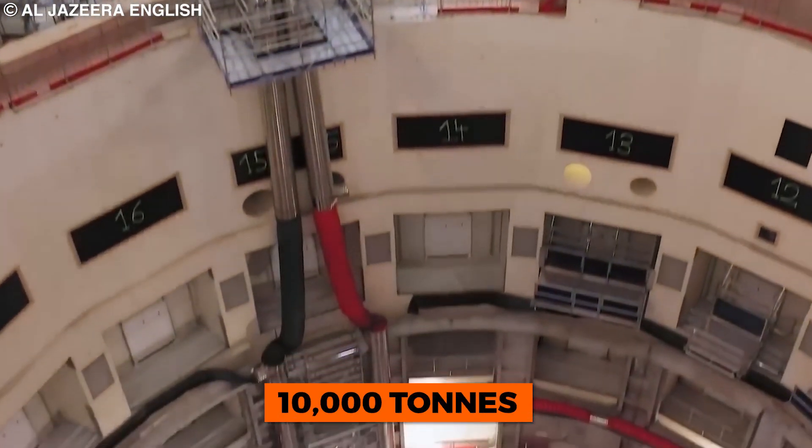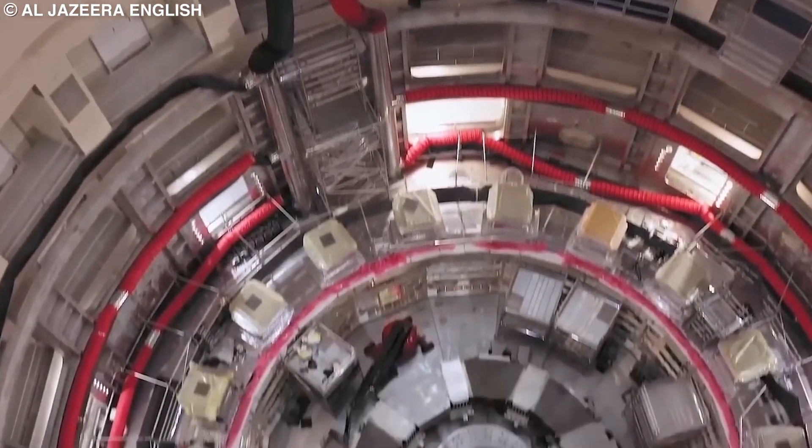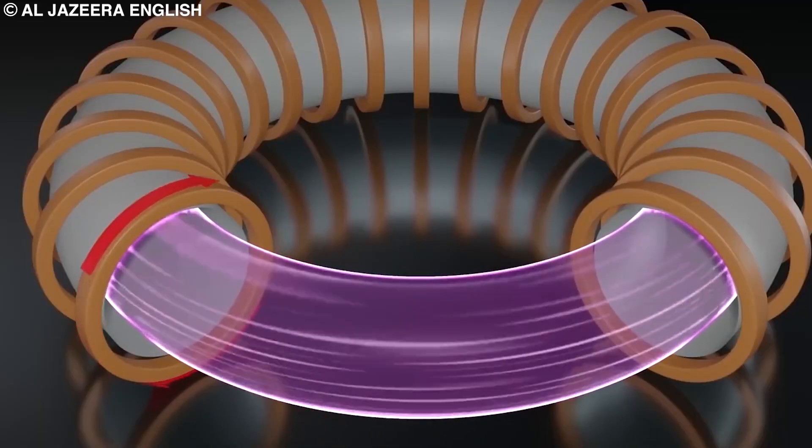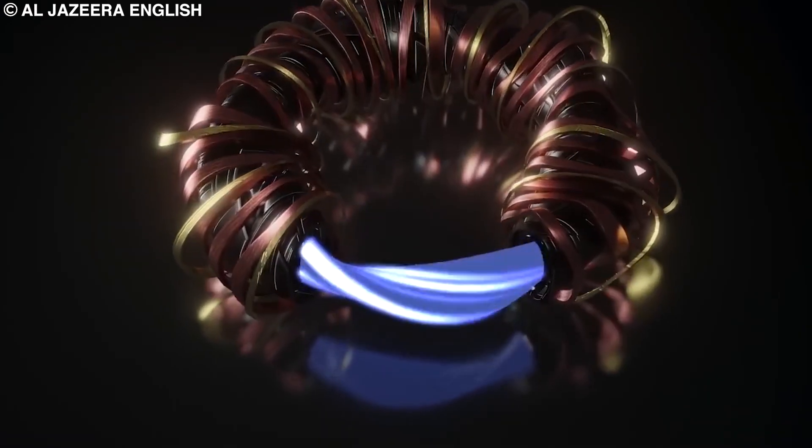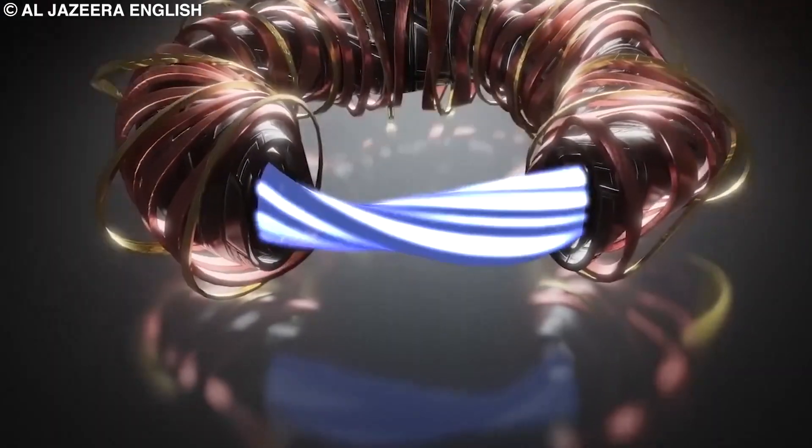In total, 10,000 tons of magnets with a combined stored magnetic energy of 51 gigajoules will produce the magnetic fields that will initiate, confine, shape, and control the ITER plasma.